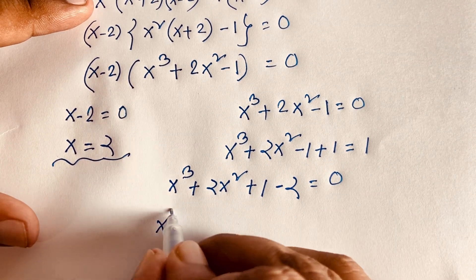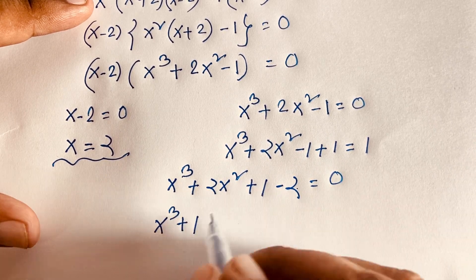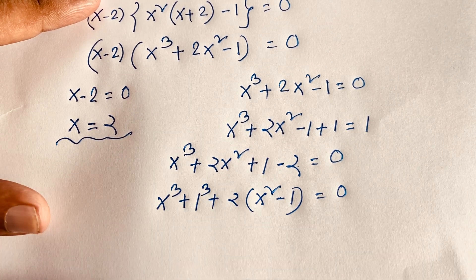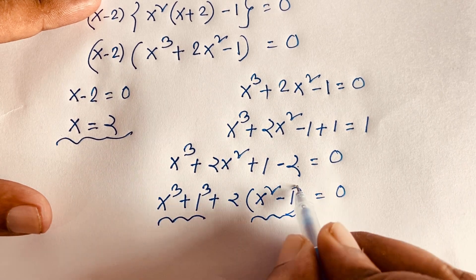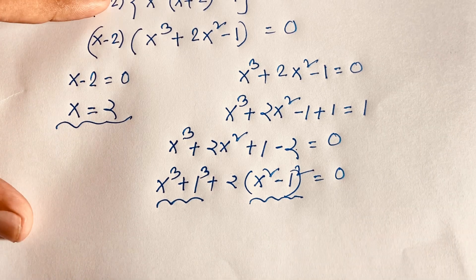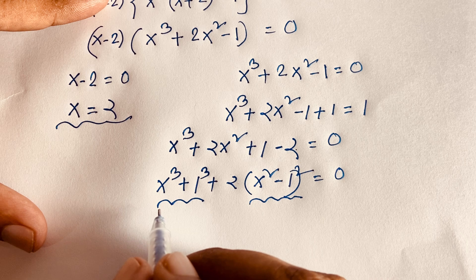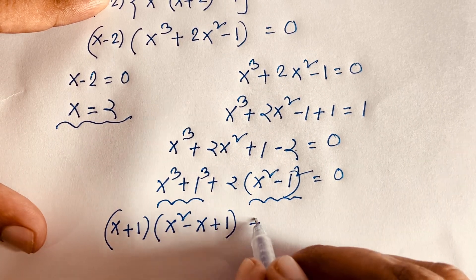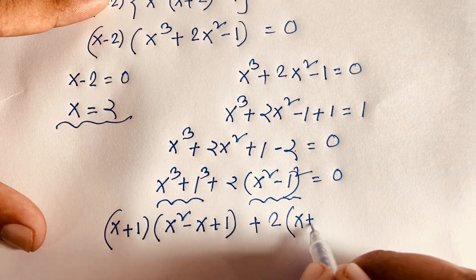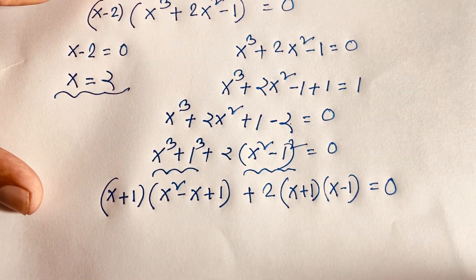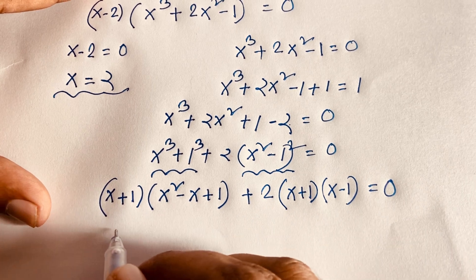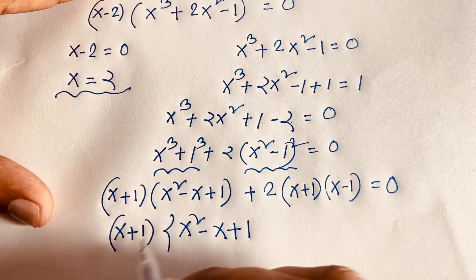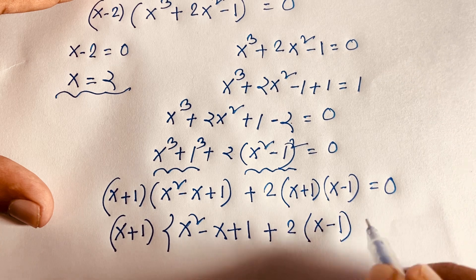We rewrite as x³ + 1 + 2(x² - 1) = 0. Treating 1 as 1³, and using the sum of cubes identity a³ + b³ = (a + b)(a² - ab + b²), we get (x + 1)(x² - x + 1) plus 2(x² - 1) = 0. Using difference of squares on x² - 1 gives 2(x + 1)(x - 1) = 0. So the expression is (x + 1)(x² - x + 1) + 2(x + 1)(x - 1) = 0.